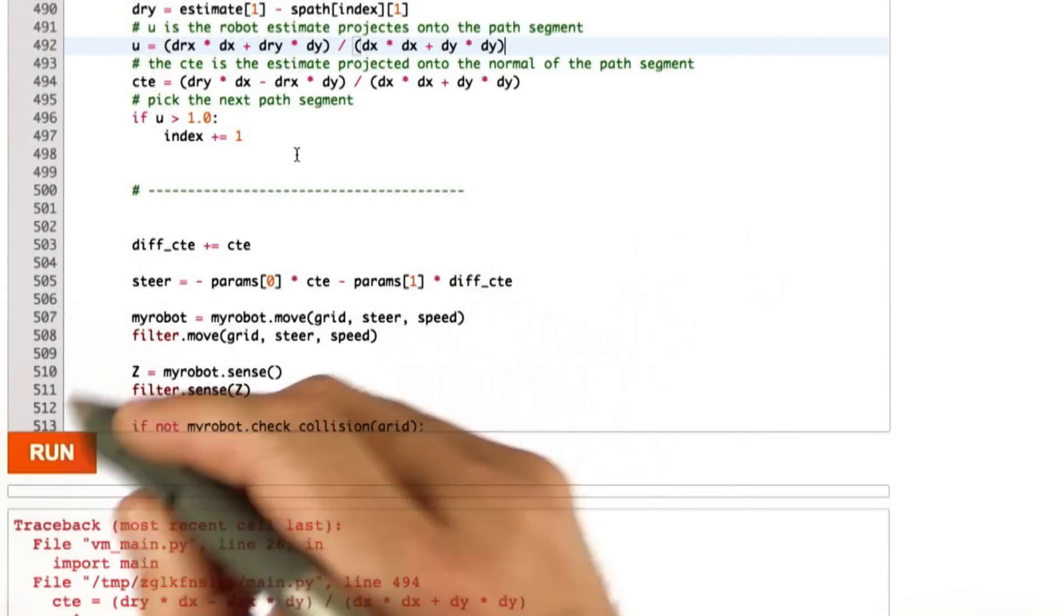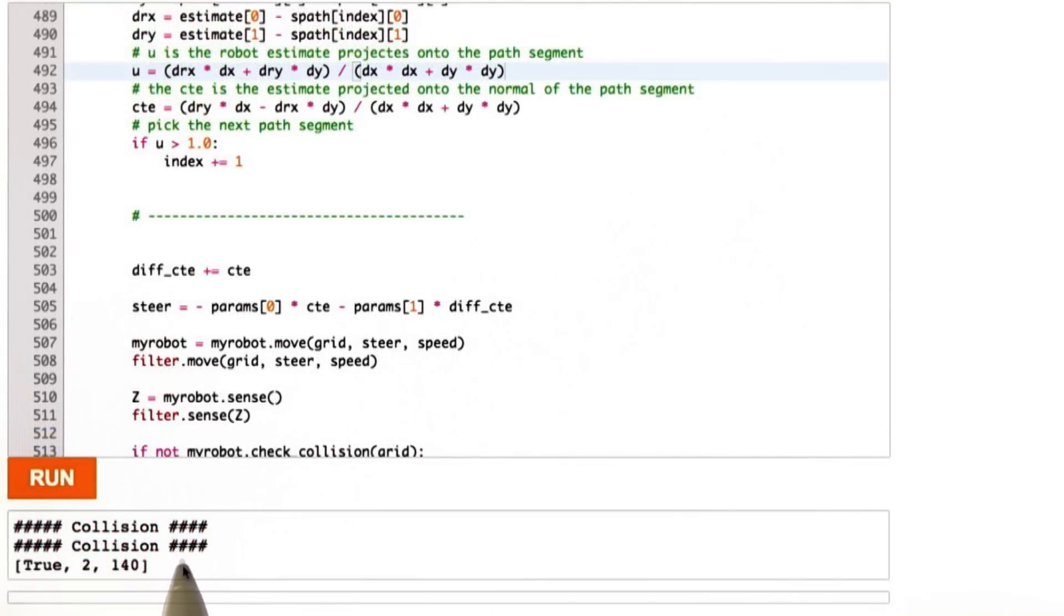So I added the missing bracket, and when I run it, I get sometimes a collision. There's two collisions here, but I still reach the goal in 140 steps.